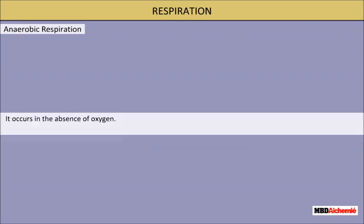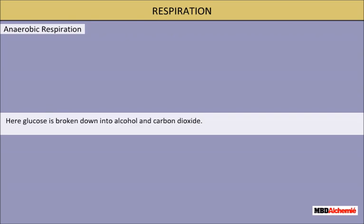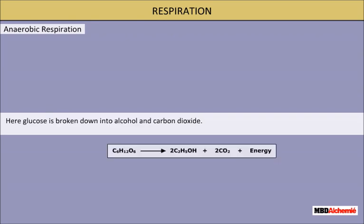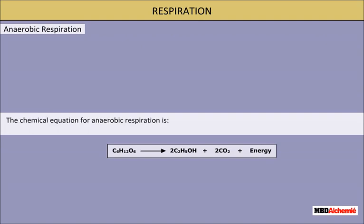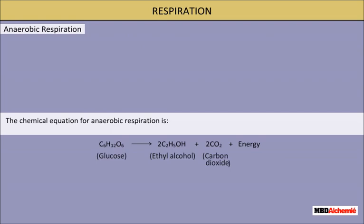Anaerobic respiration occurs in the absence of oxygen. It takes place in some lower organisms like yeast and bacteria. Here, glucose is broken down into alcohol and carbon dioxide. This is also called fermentation. The chemical equation is: glucose → ethyl alcohol + carbon dioxide + energy.